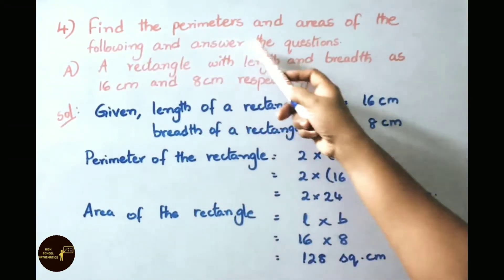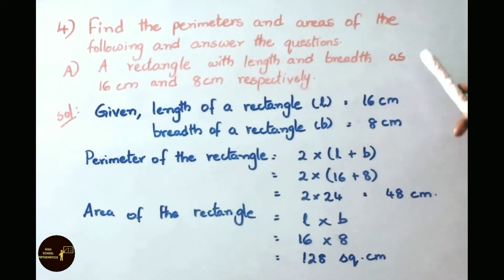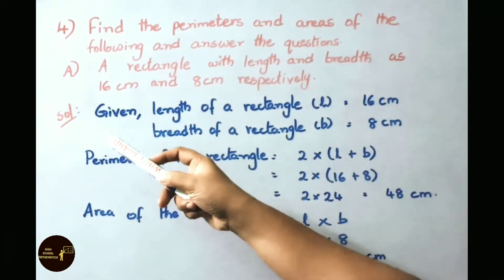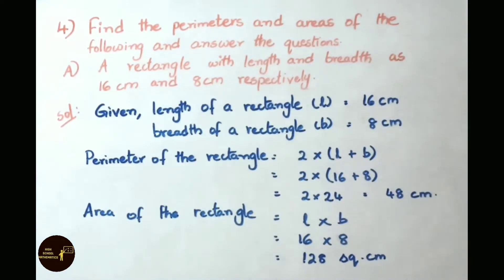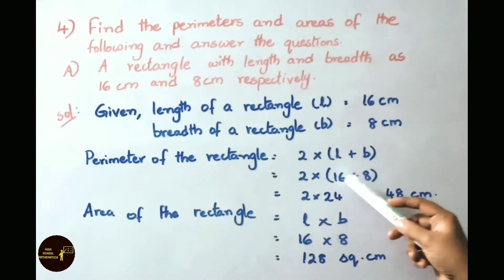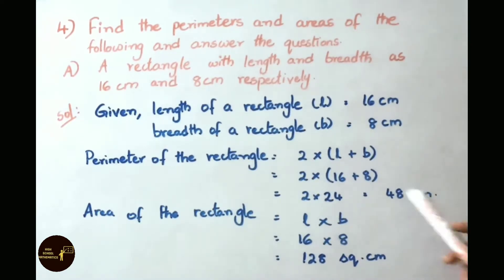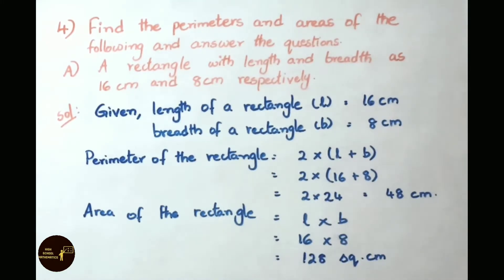See now question number 4. Find the perimeters and areas of the following. Question A: a rectangle with length 16 cm and breadth 8 cm. Perimeter equals 2 into (16 plus 8) equals 2 into 24 equals 48 cm. Area equals 16 into 8 equals 128 square cm. Therefore perimeter is 48 cm and area is 128 square cm.